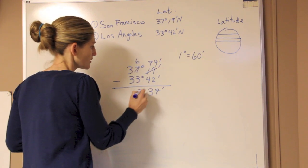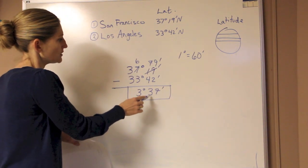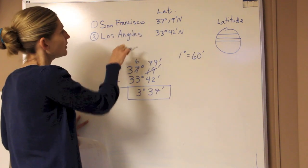So we know that San Francisco is 3 degrees and 37 minutes of latitude to the north of Los Angeles.